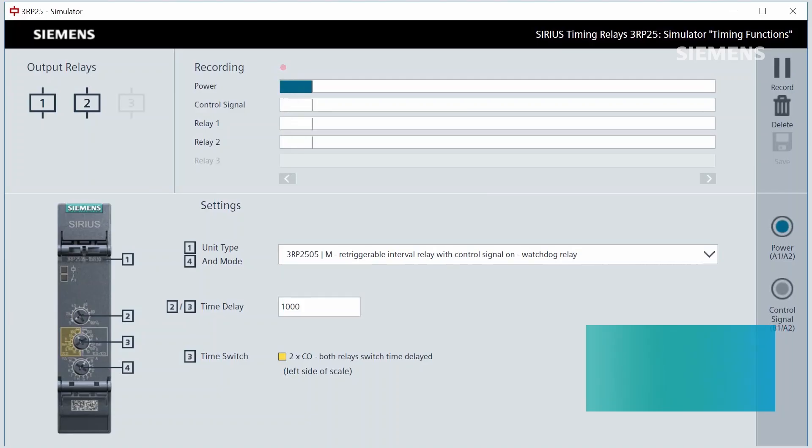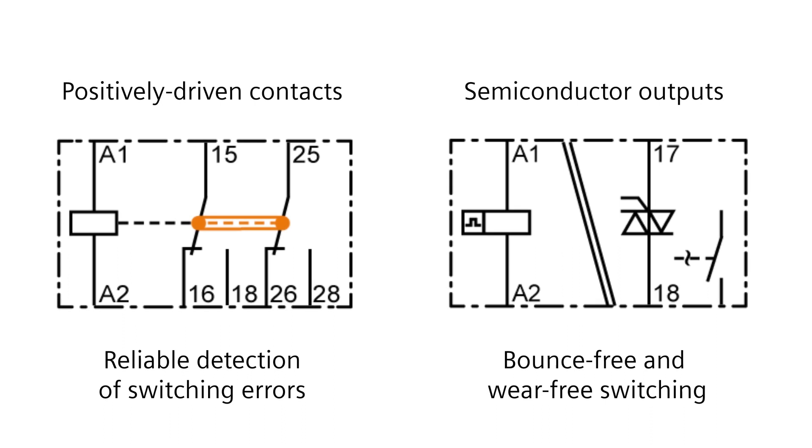The three RP25 versions have a watchdog function. The version with positively driven contacts or semiconductor outputs enables bounce-free and wear-free switching, for example.